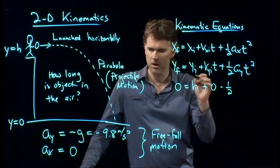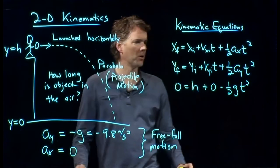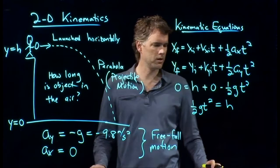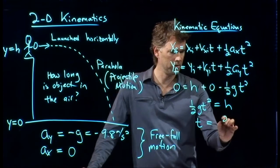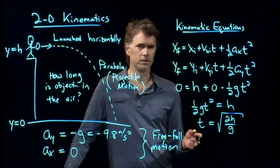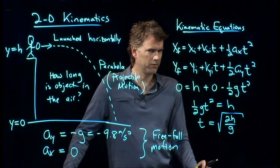And now we're just left with this. 1 half a t squared. We said a was minus g, so I'm going to pull that out in front. And I get minus 1 half g t squared. And now look. I can solve this equation for t. I'm going to move this over to the other side. I get 1 half g t squared equals h. And now I can solve for t. I multiply across by 2. I divide by g. And I take the square root.